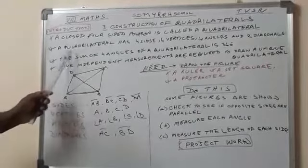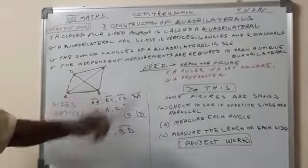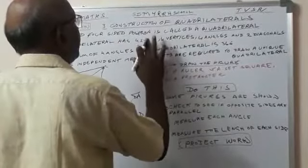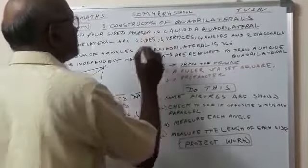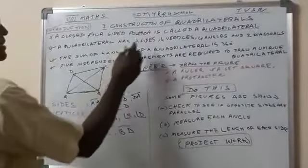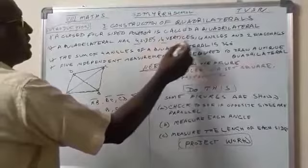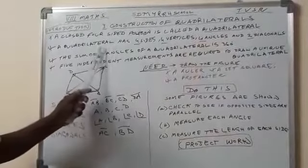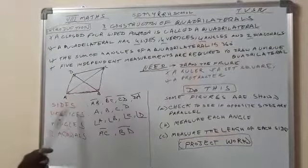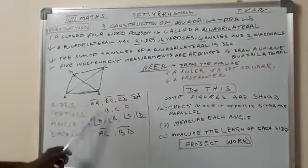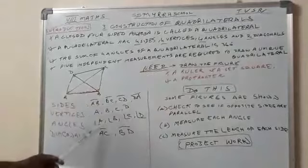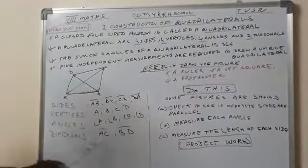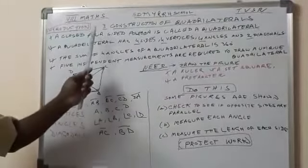A Quadrilateral has four sides. Four vertices, four angles and two diagonals. Repeat: A Quadrilateral has four sides, four vertices A, B, C, D, and four angles: Angle A, angle B, angle C, angle D, and two diagonals: AC bar and BD bar.